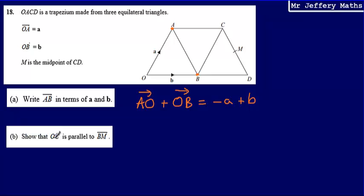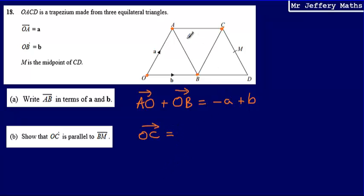Now I'm told to show that OC is parallel to BM. So O to C is parallel to B to M. The first thing I need to do is work out what vector OC is equal to. In order to do this, I need to work out how I can get from O to C.